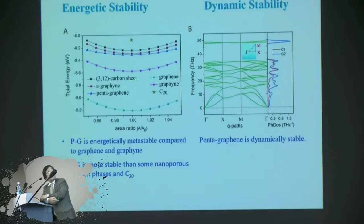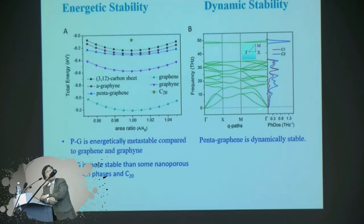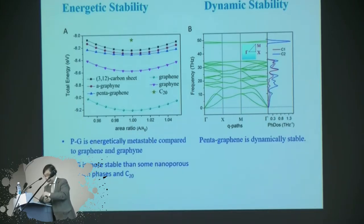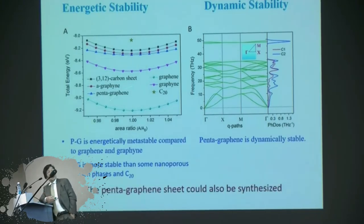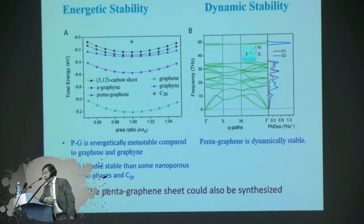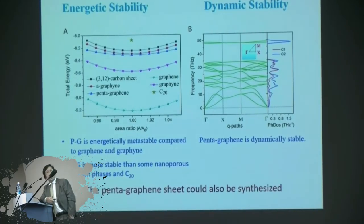We checked the energy: this is graphite, this is graphene, and this is pentagraphene — not so much different in energy. It is metastable, but still very stable. We checked the dynamical stability by computing the phonon spectrum. It has no imaginary phonons, so mechanically, even if you change the shape, it comes back — it is harmonically stable. By these things we can say we predict that this can be synthesized experimentally. It is a metastable but stable material.